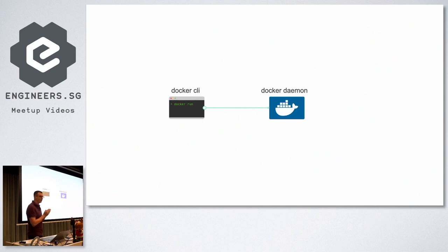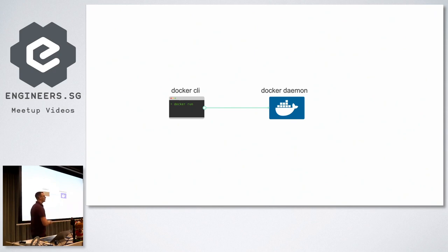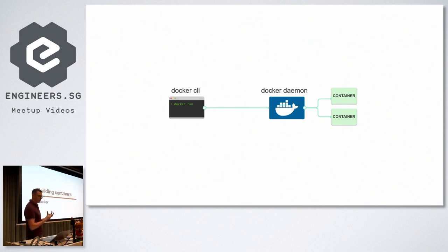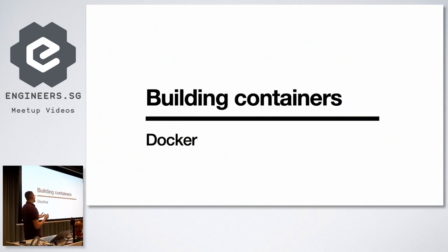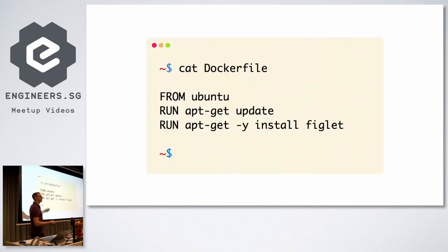So how does Docker work? It usually comes in two parts. There is a Docker CLI — a command line tool where you type commands — but that binary doesn't actually do the work. It sends a message to the Docker daemon. So when you say 'I want to run a container,' that message goes to the Docker daemon, and the daemon creates the container.